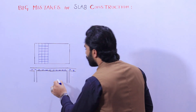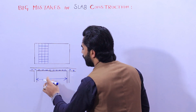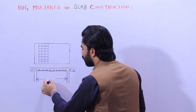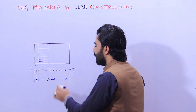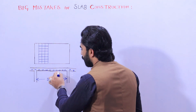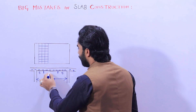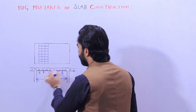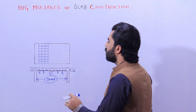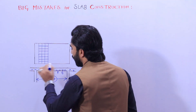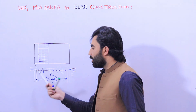At the distance of L/4 — suppose the total length is 20 feet — so at L/4, that is 5 feet from each support. This is 5 feet, this is 5 feet, and at the middle this is 10 feet, so the total is 20 feet. You are not allowed to provide lapping at this place, especially in an RCC slab.